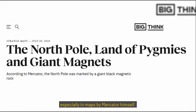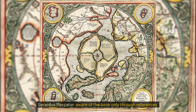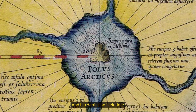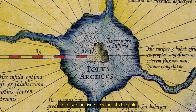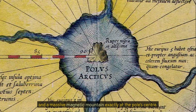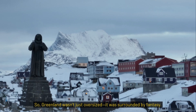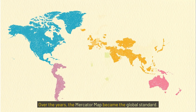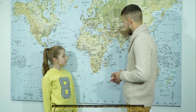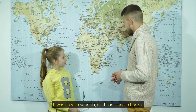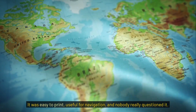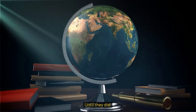Gerardus Mercator, aware of the book only through references and summaries, incorporated some of these legends into his famous 1595 map of the Arctic. His depiction included four swirling rivers flowing into the pole and a massive magnetic mountain exactly at the pole's center. So Greenland wasn't just oversized — it was surrounded by fantasy. Over the years, the Mercator map became the global standard, used in schools, atlases, and books. It was easy to print, useful for navigation, and nobody really questioned it — until they did.